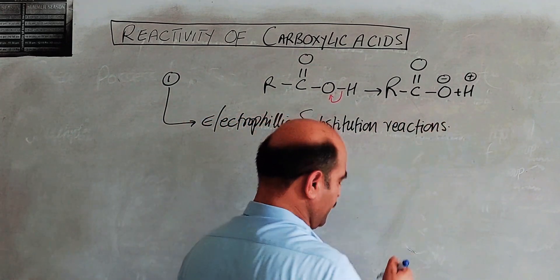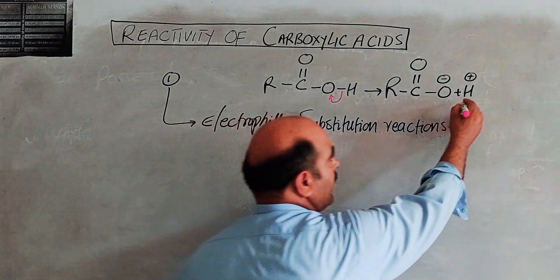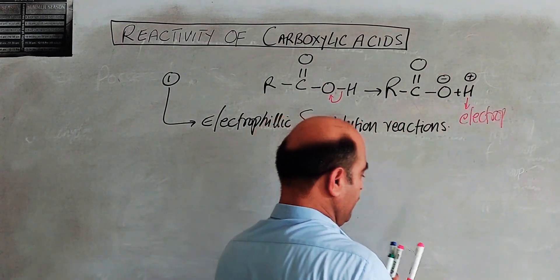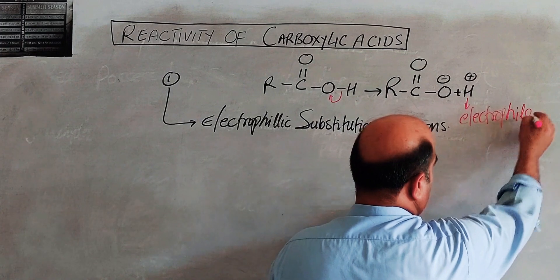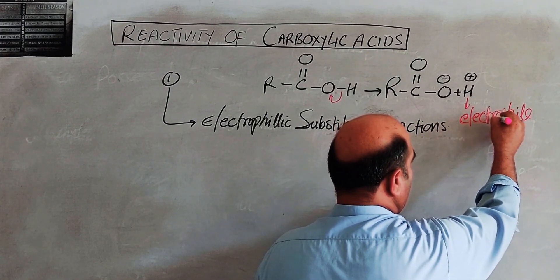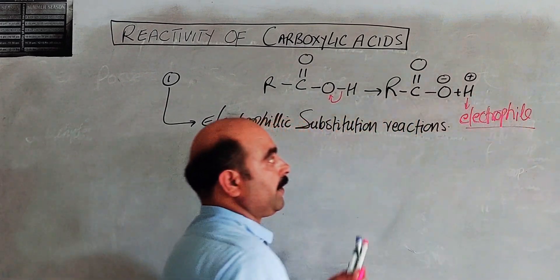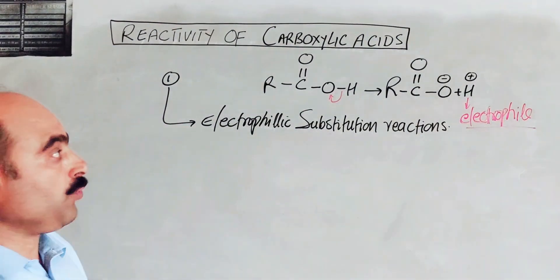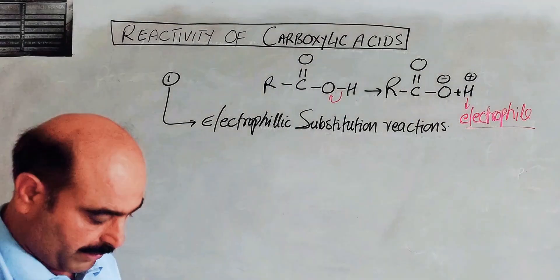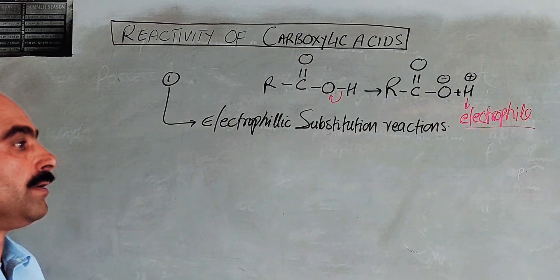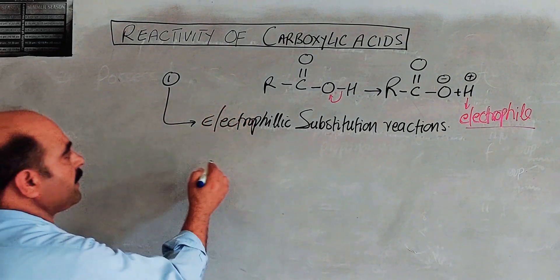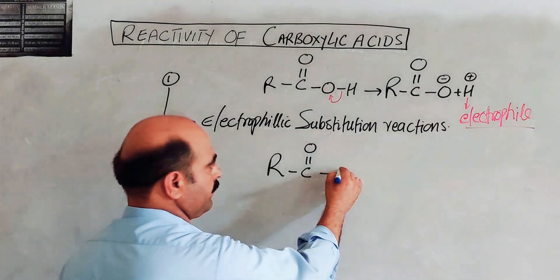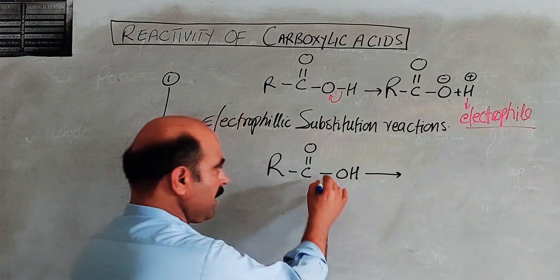Now, electrophilic substitution reaction: the electrophile and the electron level are involved. Hydrogen in the form of a hydrogen ion acts as an electrophile. Electrophilic substitution reactions are those chemical reactions during which one electrophile is substituted by another electrophile.